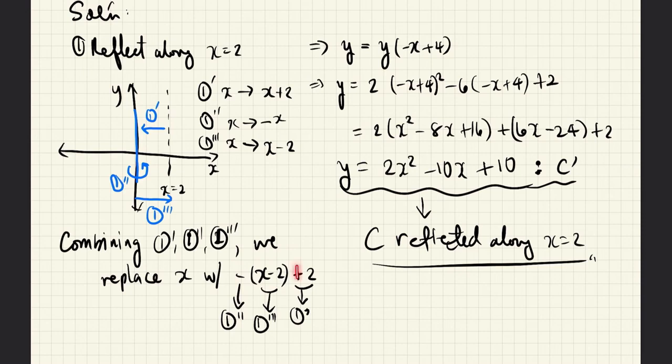Here, the plus 2 is from the first operation. The minus here is from the second operation. And the minus 2 is from the third operation. So, now let us replace the x's with this expression. In other words, the original y would now be y of minus x plus 4.